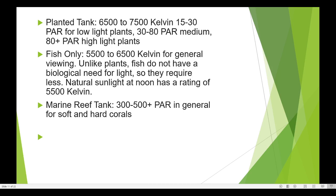For fish-only tanks, a color temperature of 5500 to 6500 Kelvin is recommended for general viewing. Unlike plants, fish do not have a biological need for light, so they require less than natural sunlight, which has a rating of around 5500 Kelvin.